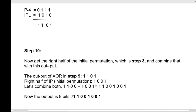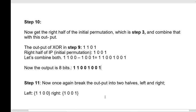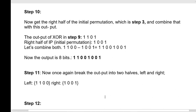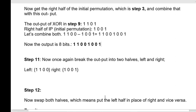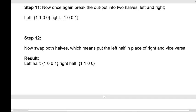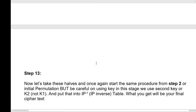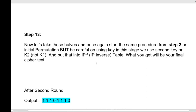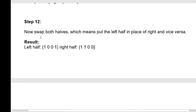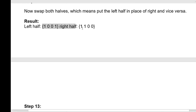Break this into two halves: left half and right half. In the final step of the first round of encryption we swap those values — the left half becomes the right half and the right half becomes the left half. The output of the first round of encryption is 10011101 (approximately). In the second round — step 13 — take these halves and start the same procedure from step two, i.e., the IP table, but be careful: in this stage we use Key 2 instead of Key 1.